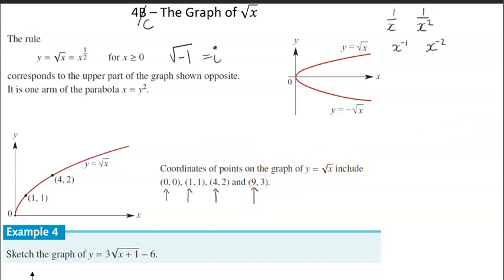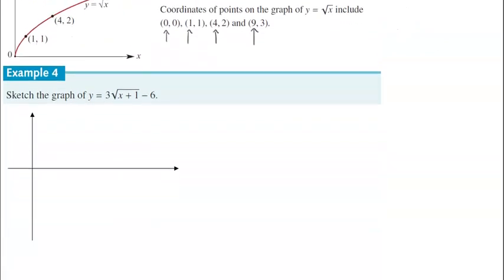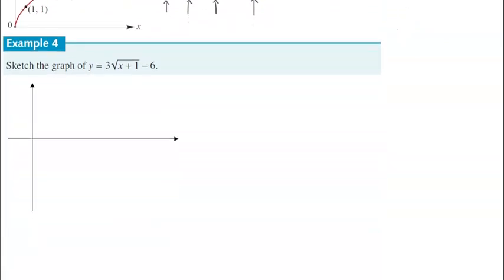Let's have a look at example 4 from the textbook. We're going to sketch the graph of y is equal to 3 times the square root of x plus 1, where x plus 1 is inside the square root, take away 6. You've already seen different types of translations in previous graphs, so you know there's going to be a shift left or right, a shift up or down, and there's also a dilation because of that 3.